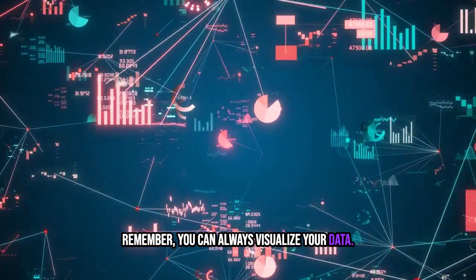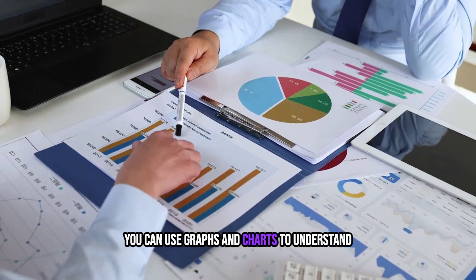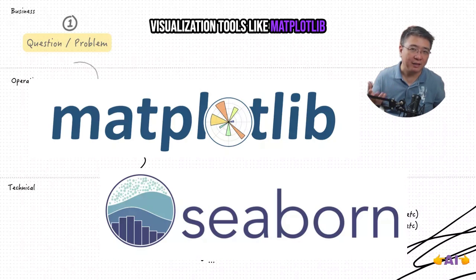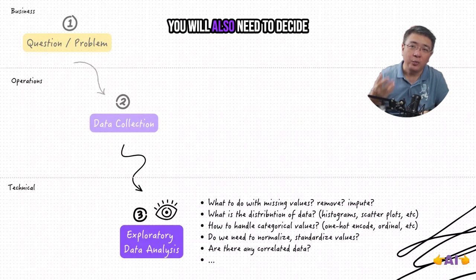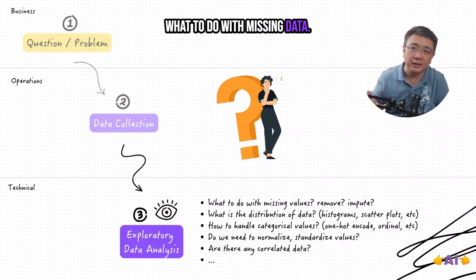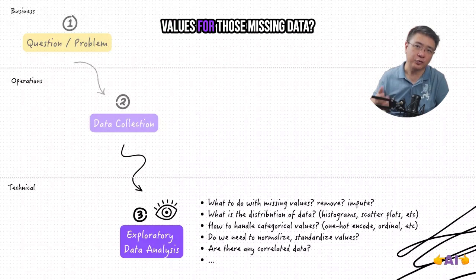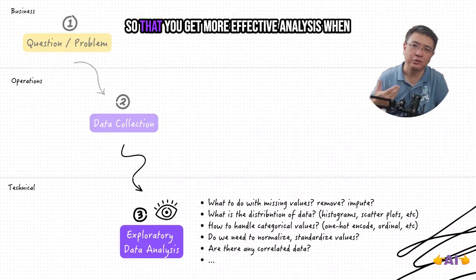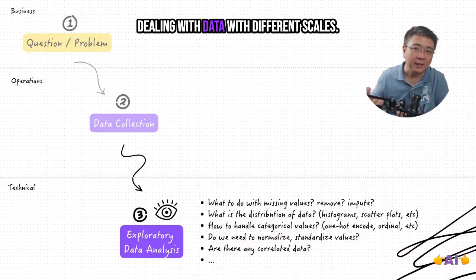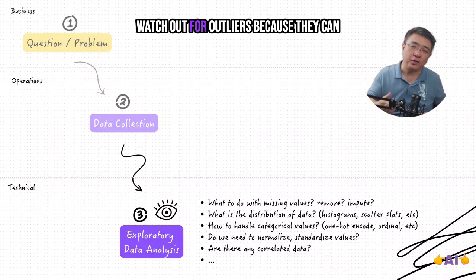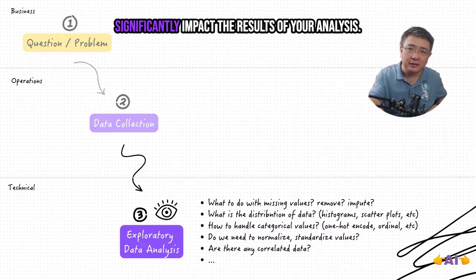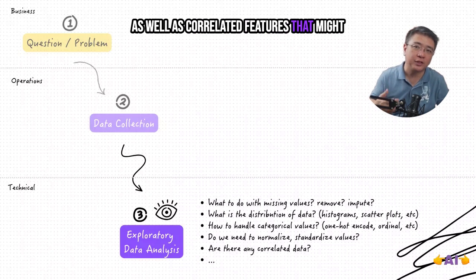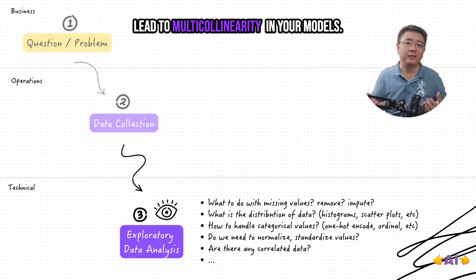Remember, you can always visualize your data. You can use graphs and charts to understand distribution, correlation, and trends in the data. Visualization tools like Matplotlib and Seaborn can be invaluable. You will also need to decide what to do with missing data or whether you're going to ignore or impute values for those missing data. Consider normalizing or standardizing data so that you get more effective analysis when dealing with data with different scales. Watch out for outliers because they can significantly impact the result of your analysis as well as correlated features that might lead to multicollinearity in your models.